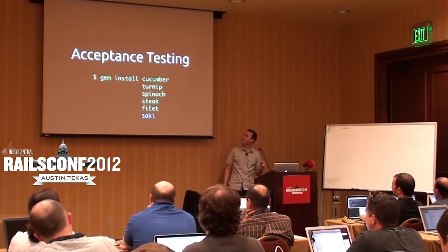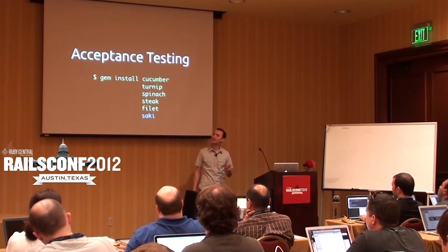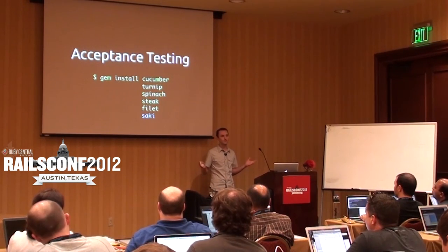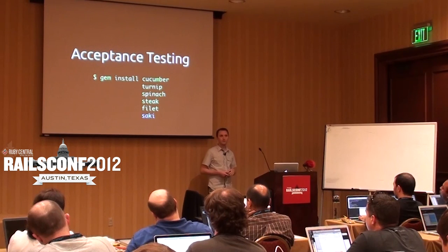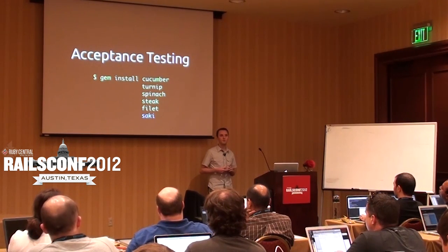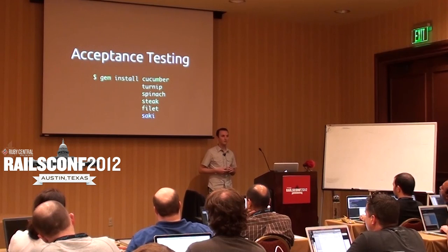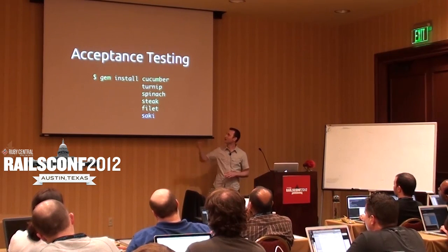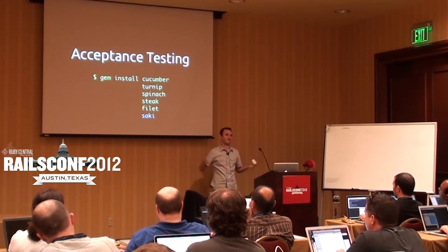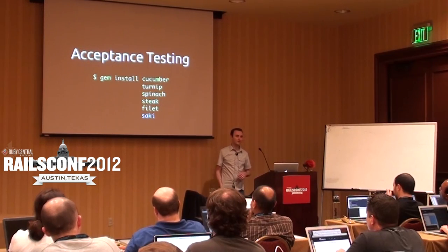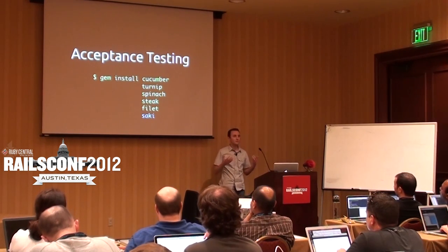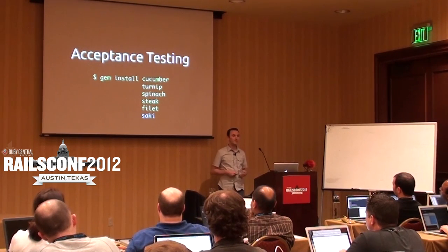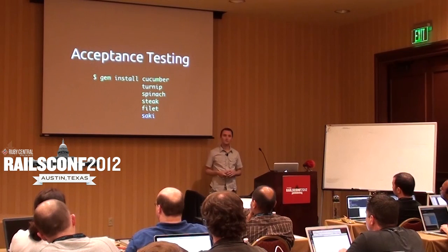The issue is that RubyGems gem names are globally unique. As a beginner, it's basically impossible to know what gem you're looking for. We said we want acceptance testing, and someone who's done this before shouted 'cucumber.' All of these — cucumber, turnip, spinach, steak, filet, sake — are actually acceptance testing libraries. Now that they're all together you can see they're named based on each other, but as a new person there's no way to know that.